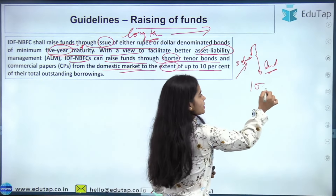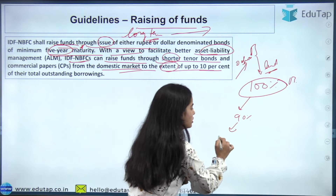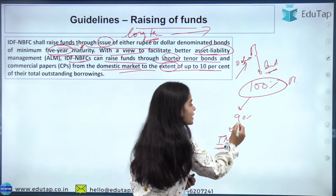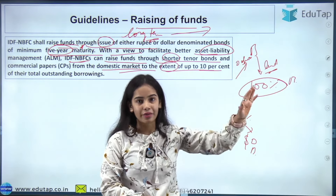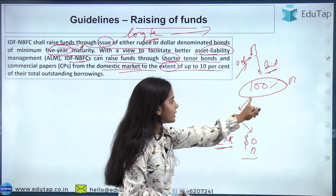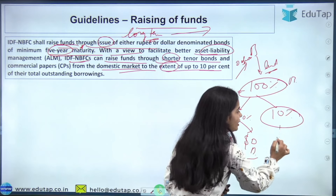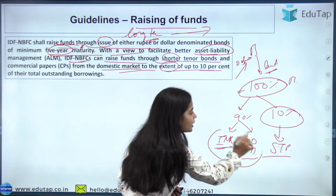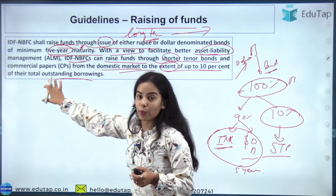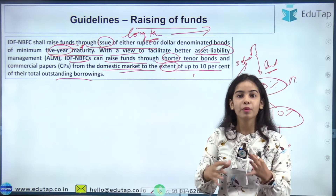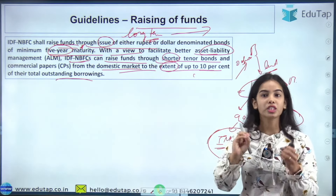So out of 100% of total outstanding borrowings, only 10% can be in the form of short-term bonds or commercial papers. The remaining borrowings must be in the form of INR-denominated bonds or dollar-denominated bonds with a maturity of 5 years.